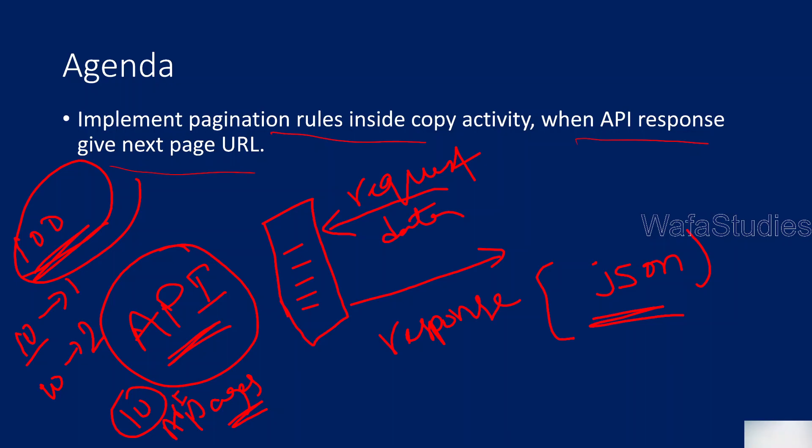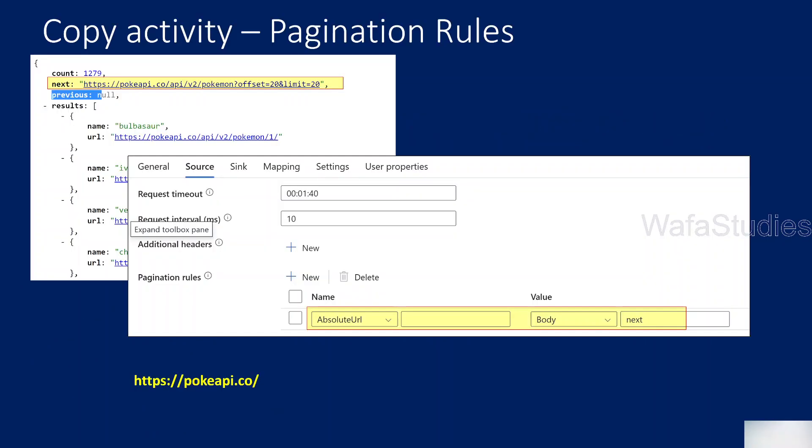In a book, the entire chapter is divided into multiple pages, right? Each page contains some content. When you complete all the pages, the entire chapter is over. Something like that — imagine it that way. So now I'm going to explain how you can implement these pagination rules inside a copy activity.